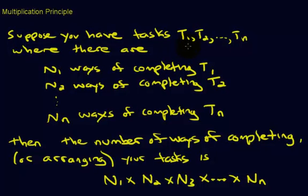The theorem or definition of the multiplication principle goes like this. Suppose you have tasks t1, t2, and so on, all the way up to tn. So we've got n number of tasks where there are n1 ways of completing task 1, n2 ways of completing task 2, and little n subscript n ways of completing the nth task.